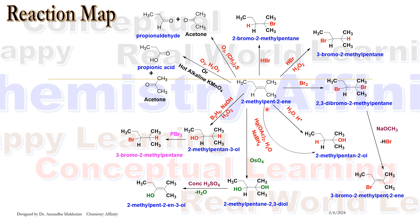When this alkene molecule reacts with water in presence of an acid catalyst we get alcohol. Here OH attacks to the more substituted carbon and hydrogen attacks to the less substituted carbon. We are getting 2-methyl pentane-2-ol.